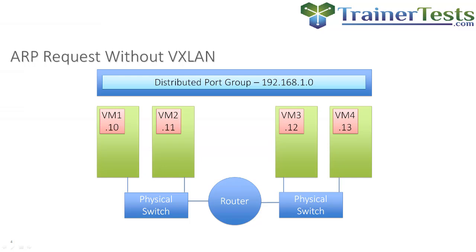In this diagram, we see at the top of our screen a distributed port group. That distributed port group is configured for some VLAN — let's say VLAN 10 — with virtual machines on the address range 192.168.1.0. I've got multiple virtual machines running on different ESXi hosts. Each one of those green blocks represents an ESXi host, so you have VM1, VM2, VM3, and VM4 all connected to the same distributed switch. On the bottom we've got our actual physical network used to interconnect these ESXi hosts.